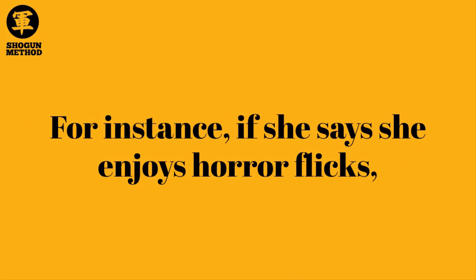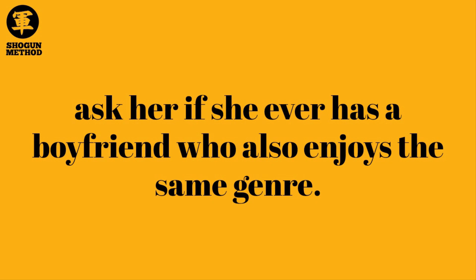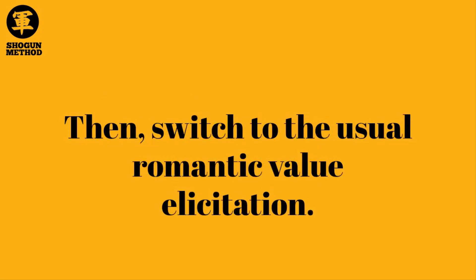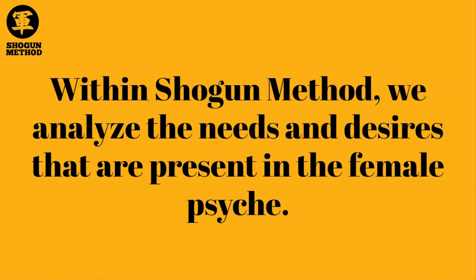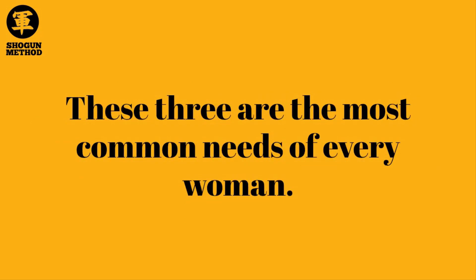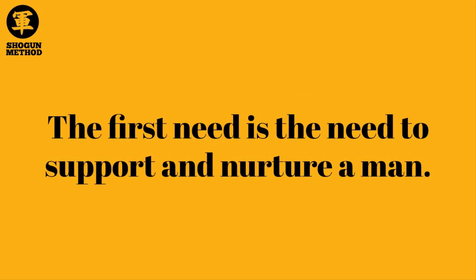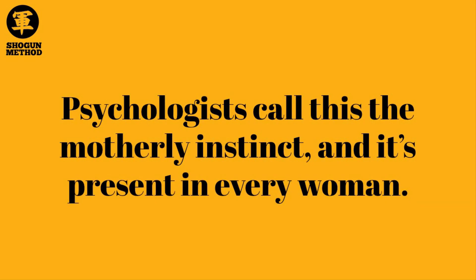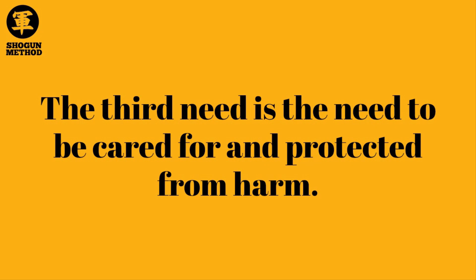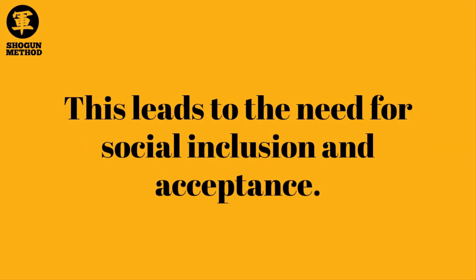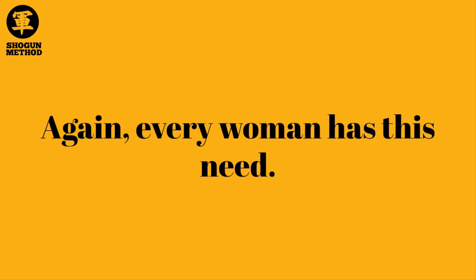For instance, if she says she enjoys horror flicks, ask if she's ever had a boyfriend who also enjoys the same genre, then switch to romantic value elicitation. Ask what she likes in a guy and what she looks for in love. Within Shogun Method, we analyze three common needs of every woman: the first is the need to support and nurture a man — the motherly instinct; the second is the need to exert her own individuality; and the third is the need to be cared for and protected, leading to the need for social inclusion and acceptance.